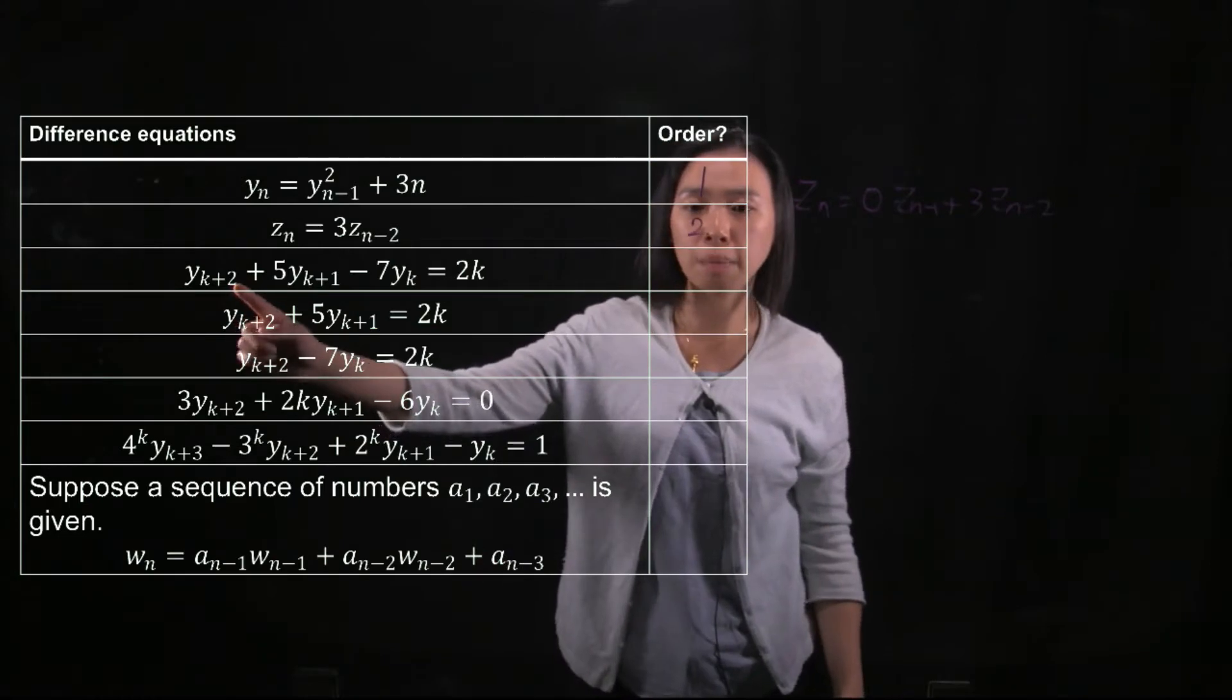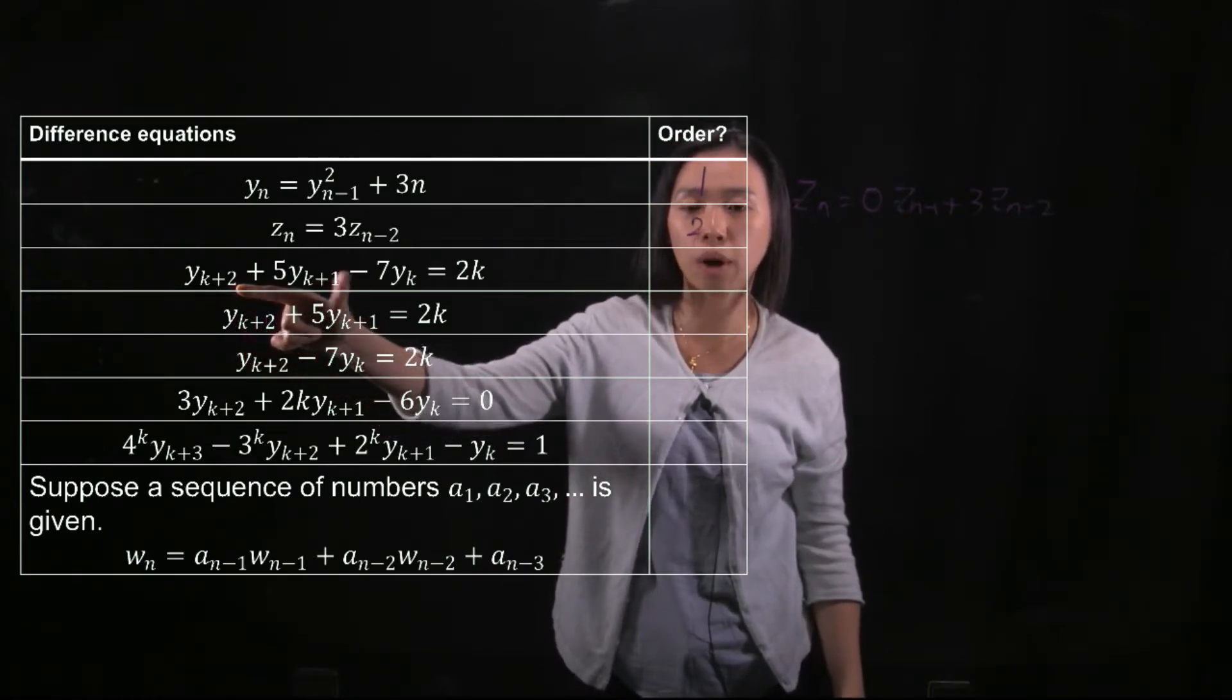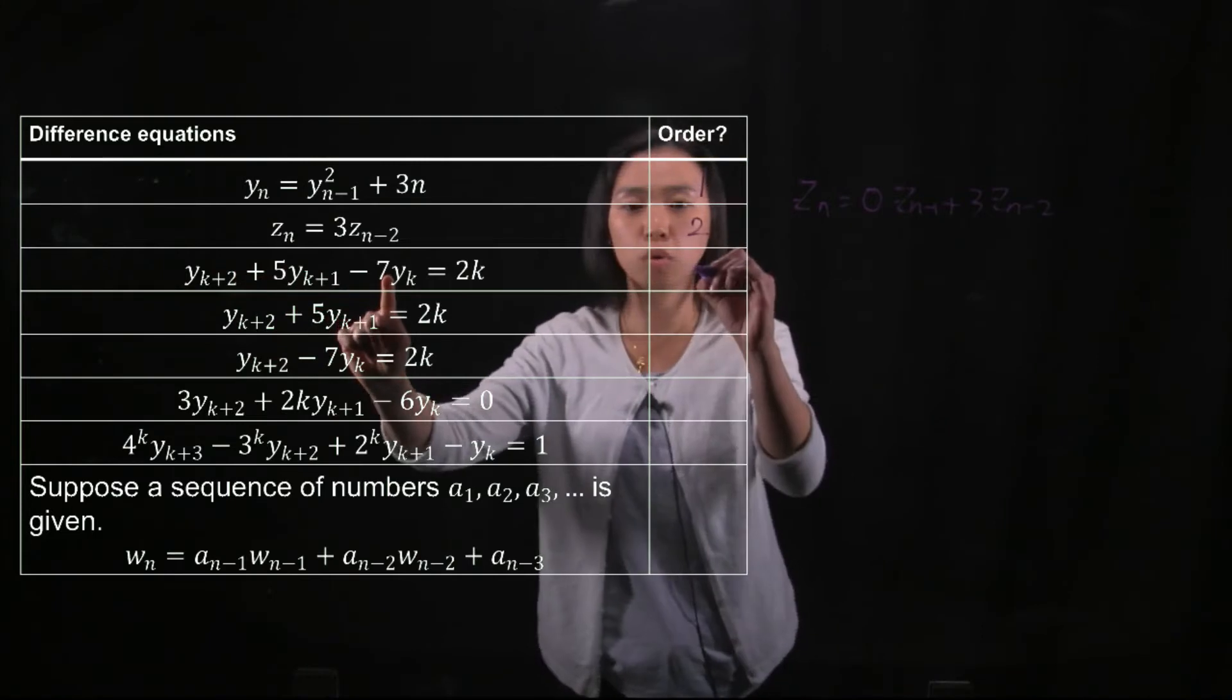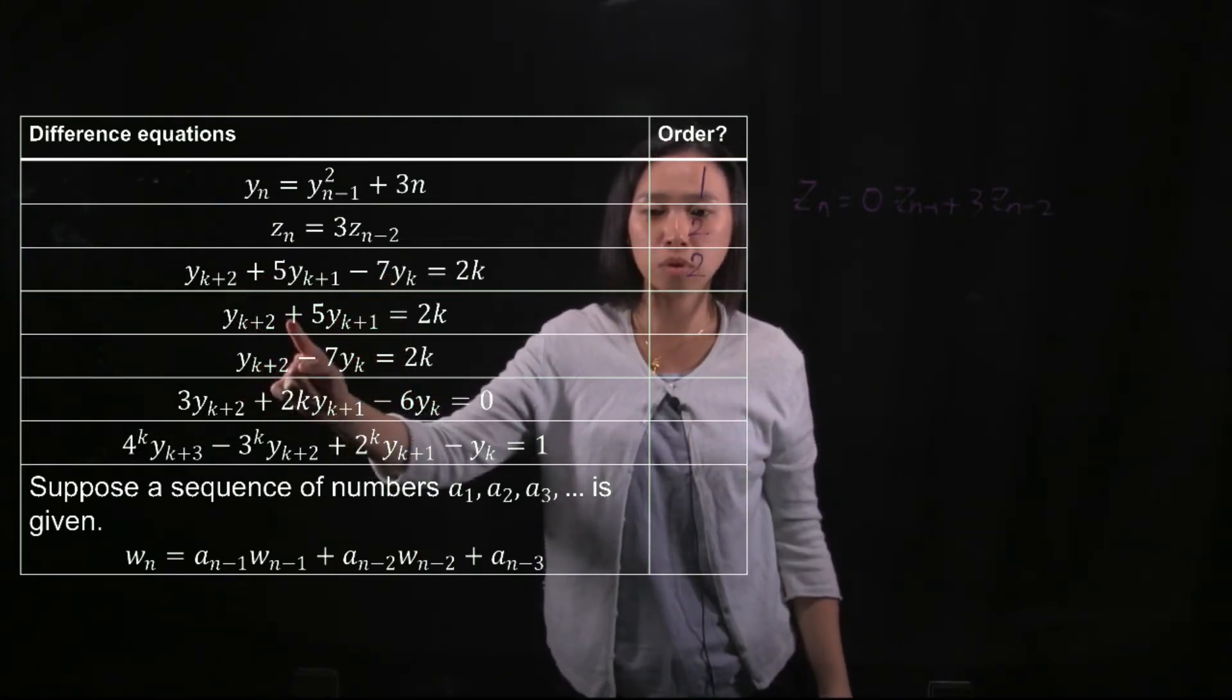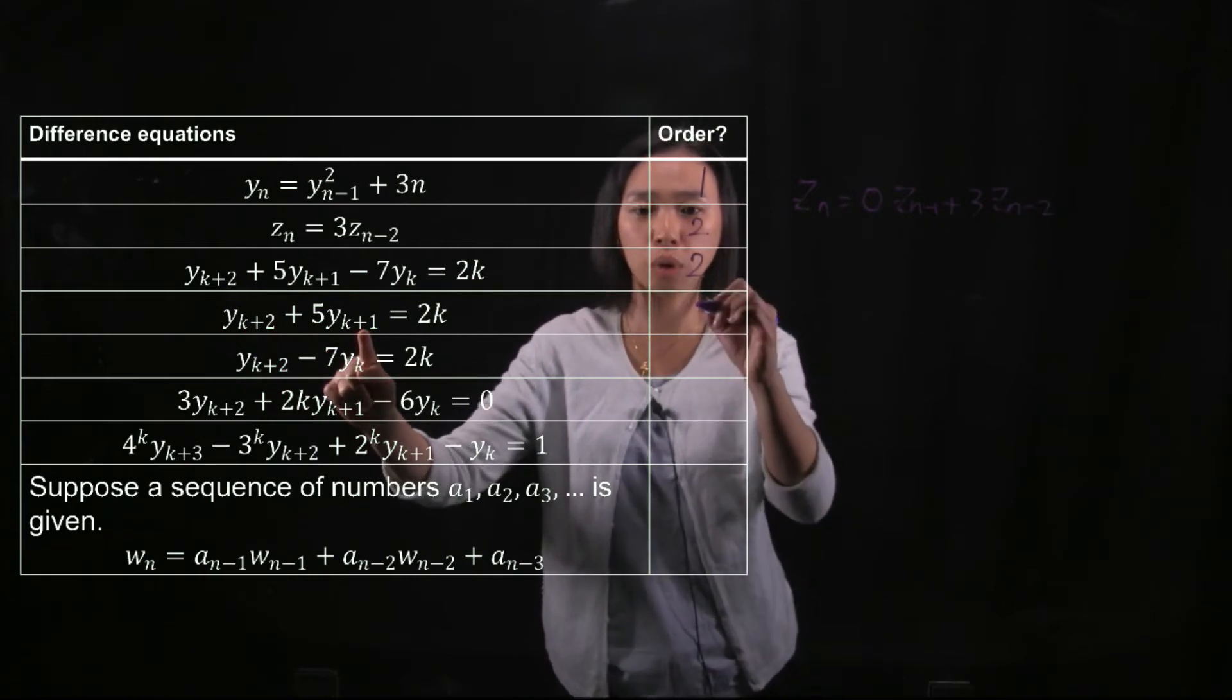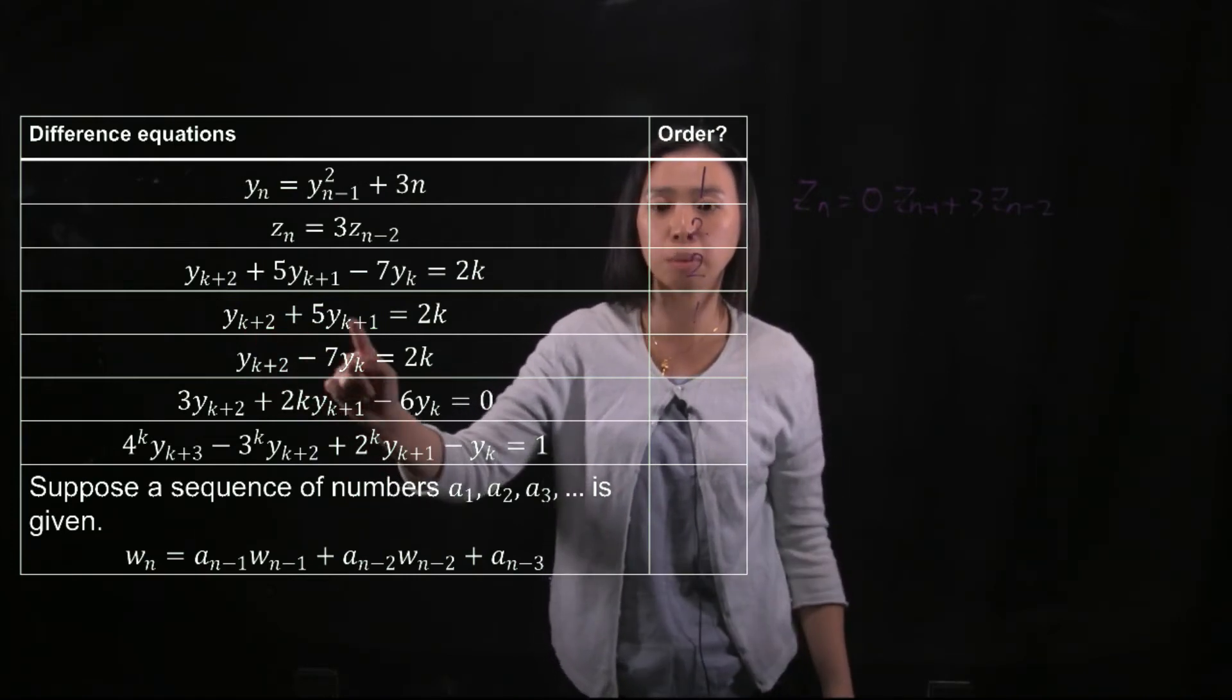And in this example, yk plus 2 depends on yk plus 1 depends on yk. So it depends on the previous two terms. The order is 2 again. yk plus 2 depends on yk plus 1. So the order is 1. It depends on the previous one term.